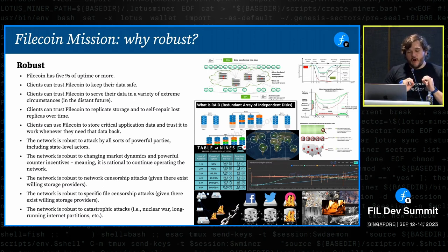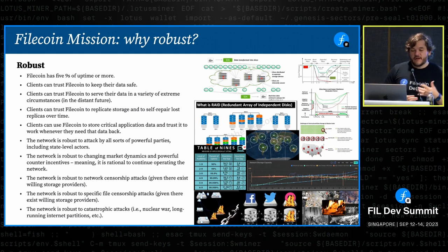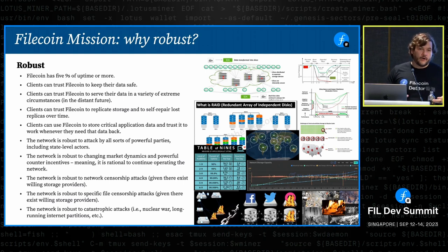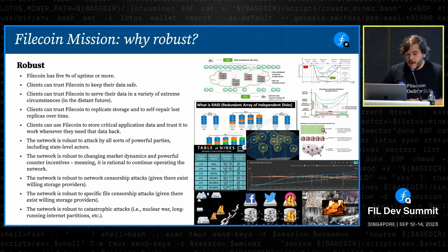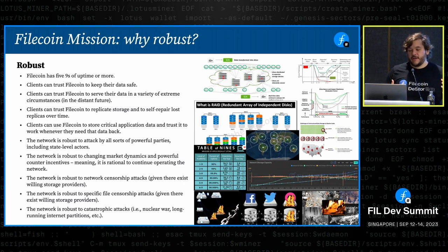By robustness, we also want to make sure the network is robust against very powerful parties, including state-level actors. The internet is a global network that has enabled cross-border collaboration across the planet, and a huge part of its success has been enabling humans from many different cultures to exchange ideas, coordinate, and collaborate. We should be able to defend human rights through that structure. We also want robustness against all kinds of attacks — parties motivated by money, malintent, or censorship goals that might want to attack specific participants or the substance of the network.